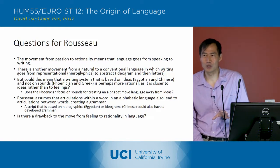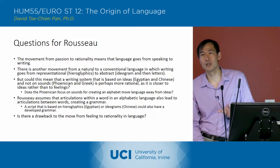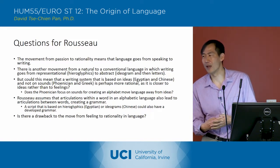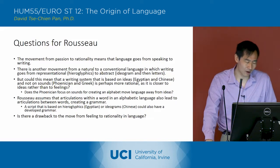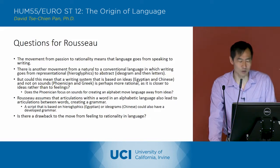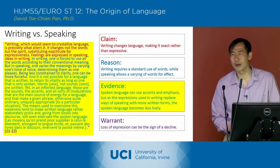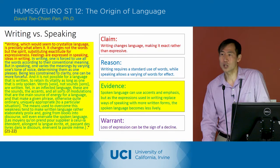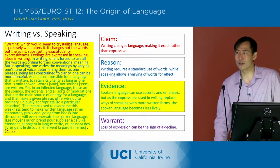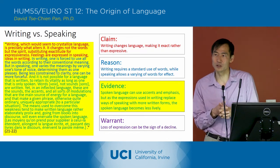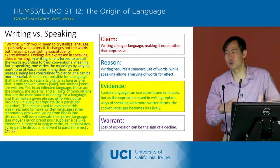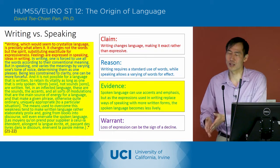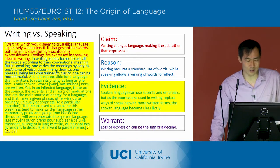There also seems to be a drawback in focusing on the movement from feeling to rationality in language, and Rousseau actually imagines this as well. He talks about some of the problems of this movement in the last section when he compares writing and speaking. His claim is that writing changes language, making it exact rather than expressive — the movement from a primitive to a more advanced language is the movement from purely spoken language to language that includes writing.